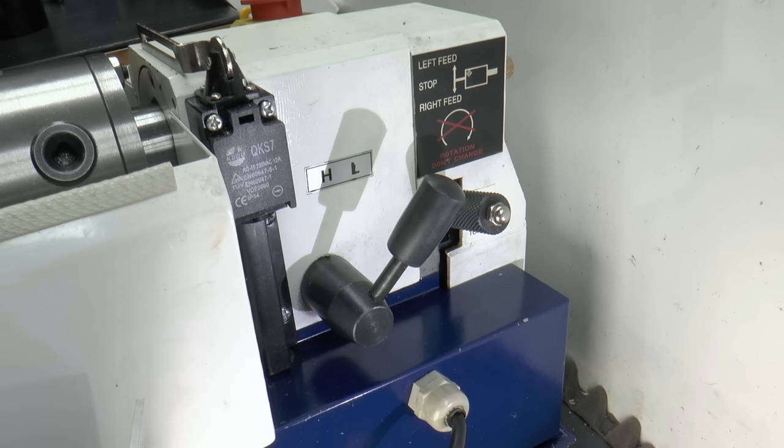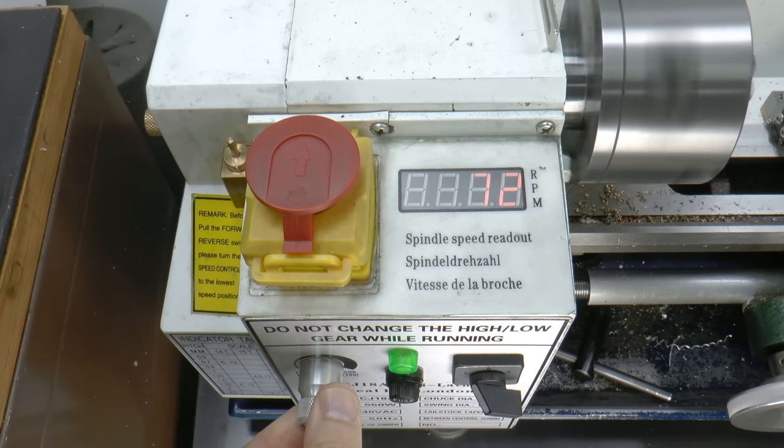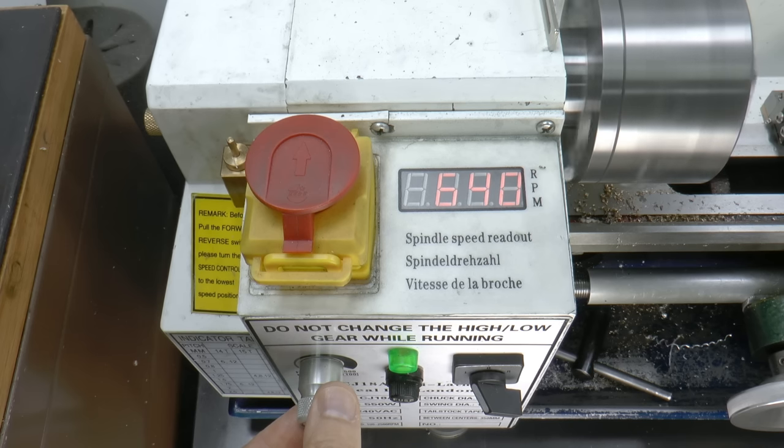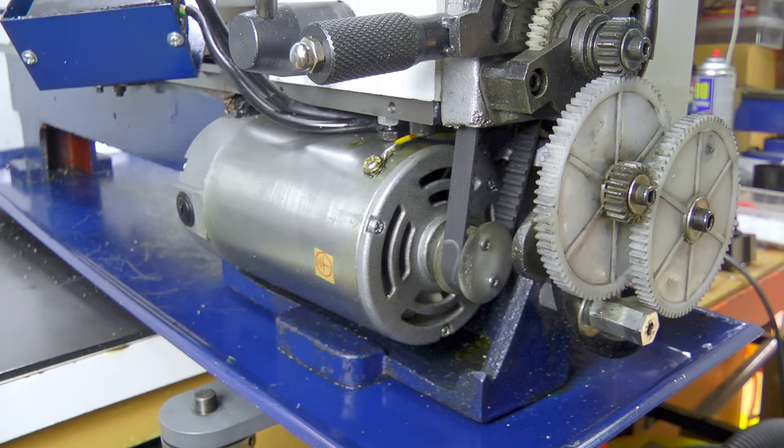As well as the variable speed control, the lathe has a two speed gearbox. Fast and insane. From experience, I know that I rarely go over about 650 RPM, which is about half a turn on the knob. It seems like it would make sense to try and adjust the ratio to slow the spindle down and improve torque in low gear, whilst retaining the higher speed option if I ever need it.